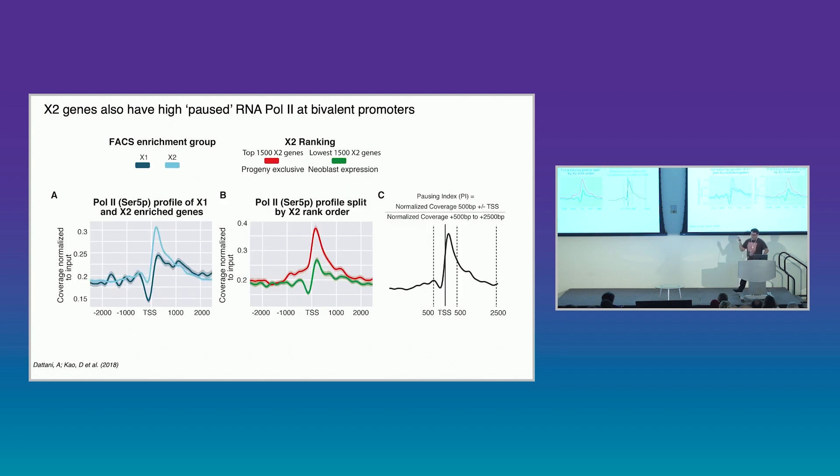But these genes that are going to switch on imminently upon differentiation, we can see we have higher levels of both the activating and suppressive mark. And we can look also at RNA pol2 and find the same pattern, that at these promoters that are going to switch on and give you active transcription upon differentiation, we actually see RNA pol2 pre-loaded. So this feature of mammalian embryonic stem cells is also a feature of stem cells in the planarian.